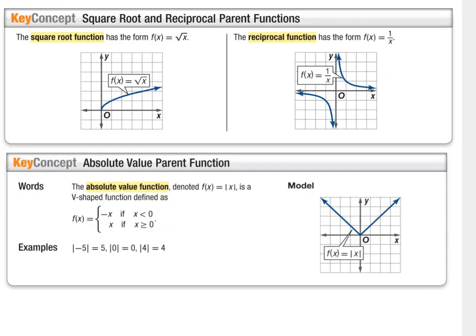Next is the square root function, which is f(x) = √x. The reciprocal function, also called the rational function, is f(x) = 1/x. And the absolute value function is f(x) = |x|.